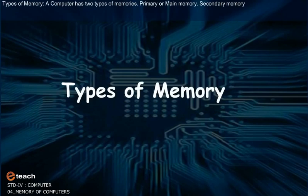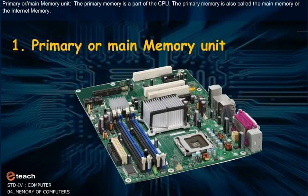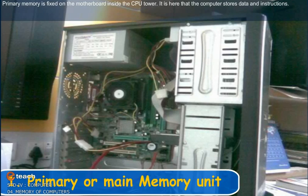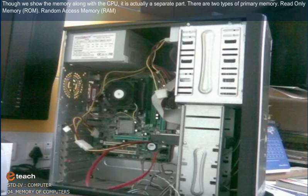Types of Memory: A computer has two types of memories — 1. Primary or Main Memory, and 2. Secondary Memory. The primary memory is a part of the CPU, also called the Main Memory or the Internal Memory. Primary memory is fixed on the motherboard inside the CPU tower. It is here that the computer stores data and instructions. Though we show the memory along with the CPU, it is actually a separate part.